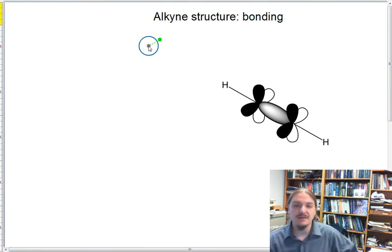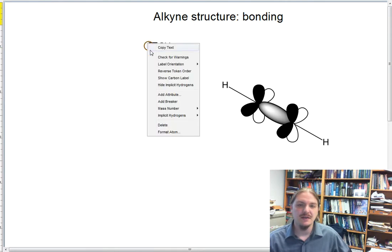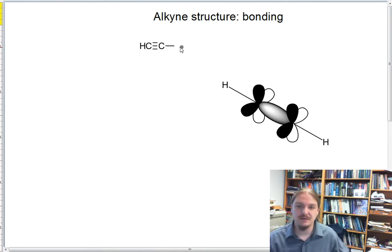The alkyne, so here again the carbon-carbon triple bond, as a multiple bond has sigma bonds and pi bonds.